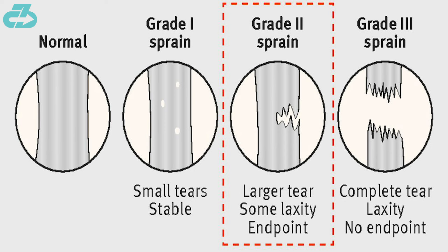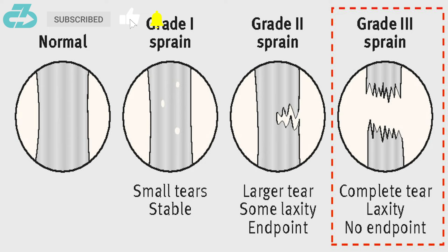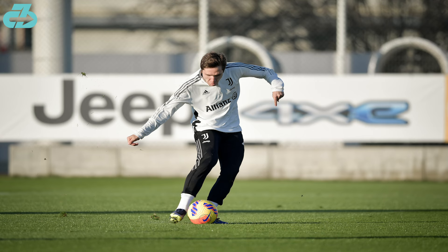A grade 2 tear with signs of knee instability, or a grade 3 full rupture — both of which require surgery — comes with a 7-9 month return timeline, and even longer return to performance due to physical and mental deficits upon returning.